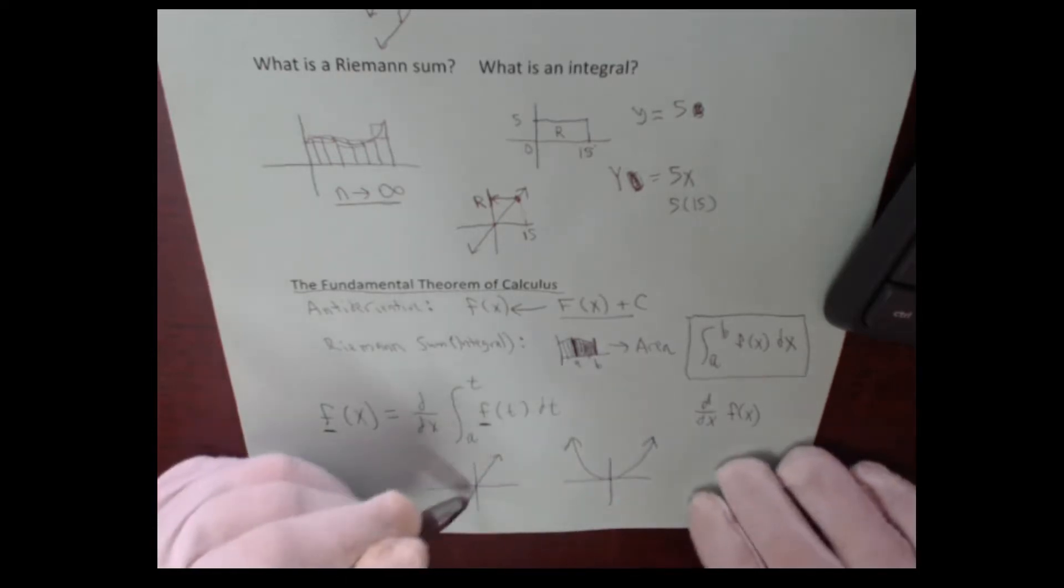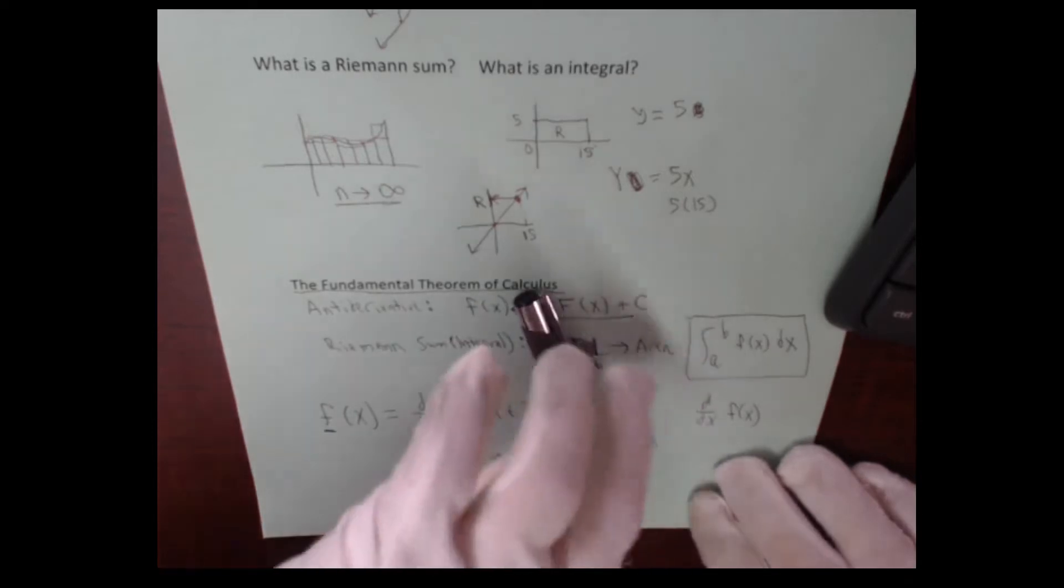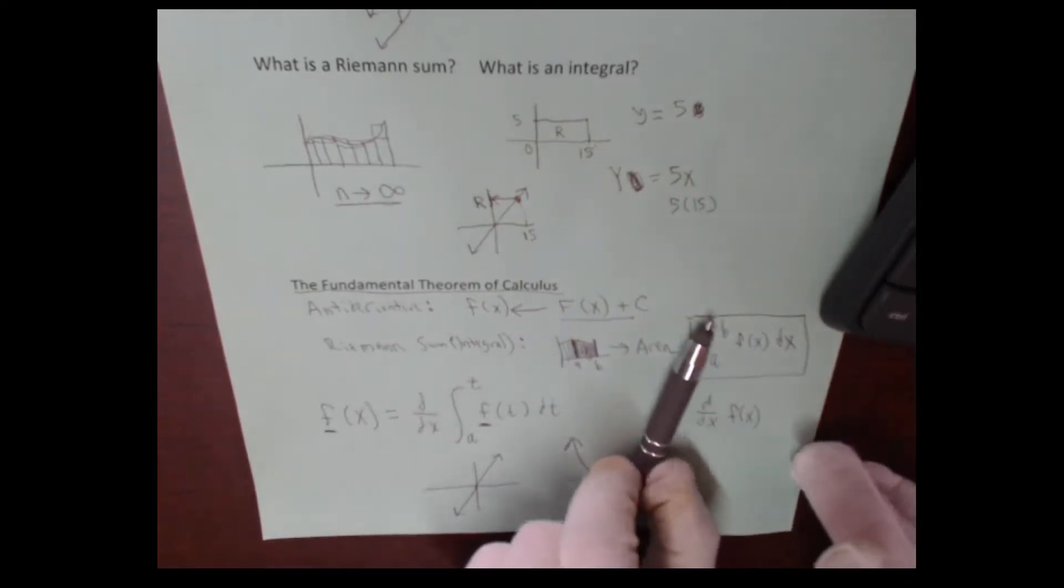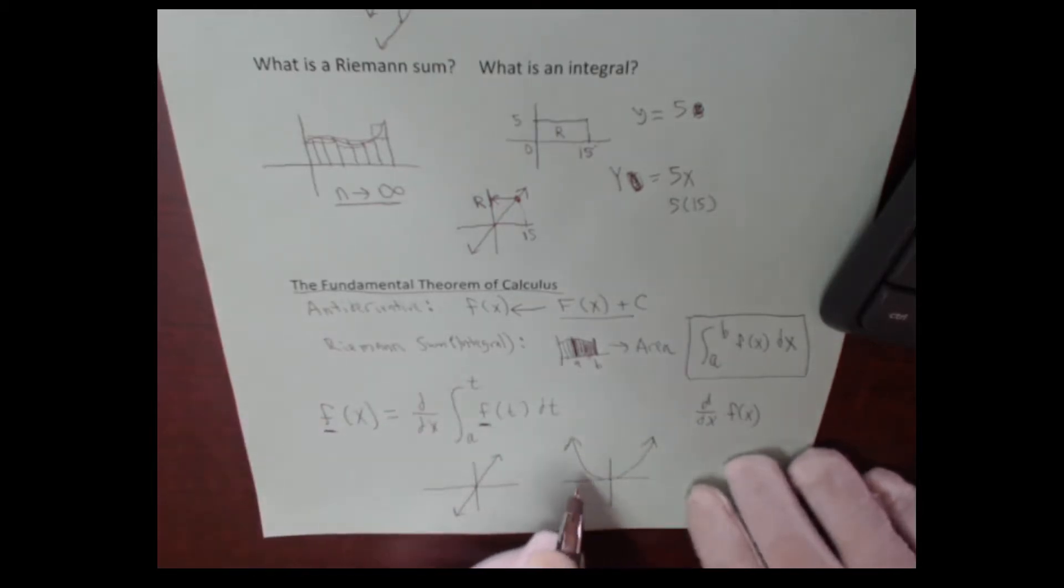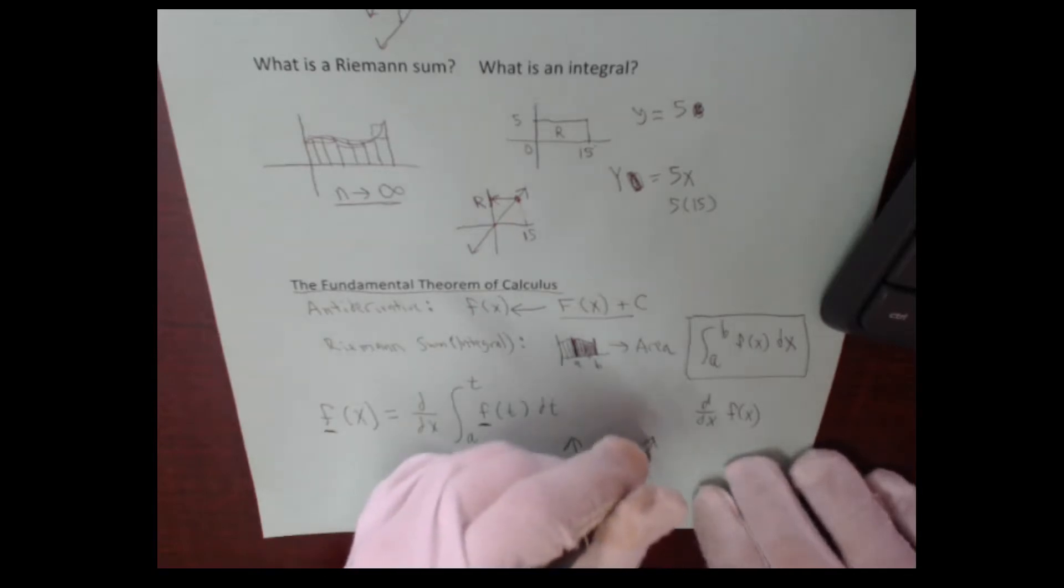We know by now that this line represents the slope of this parabola. But it turns out that this line is telling us the area enclosed by this parabola and the x-axis. Here's what I mean.